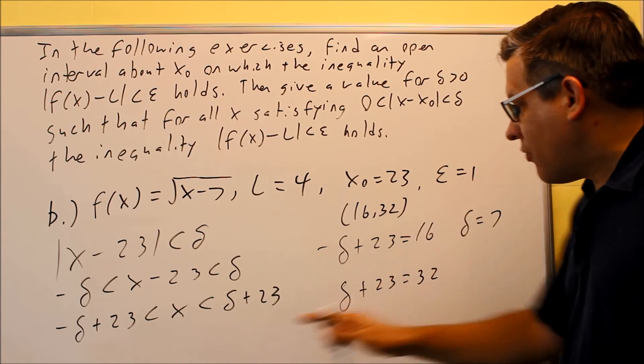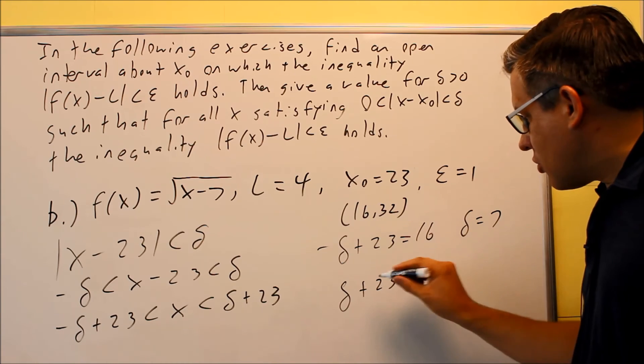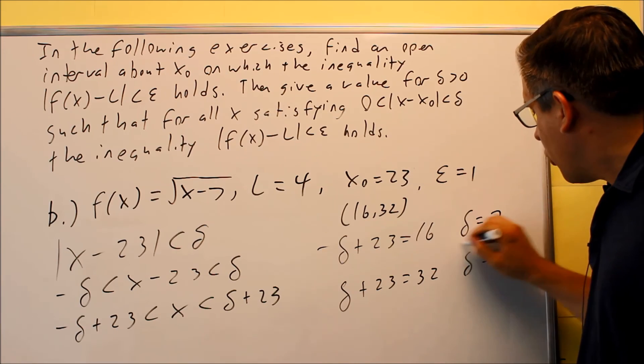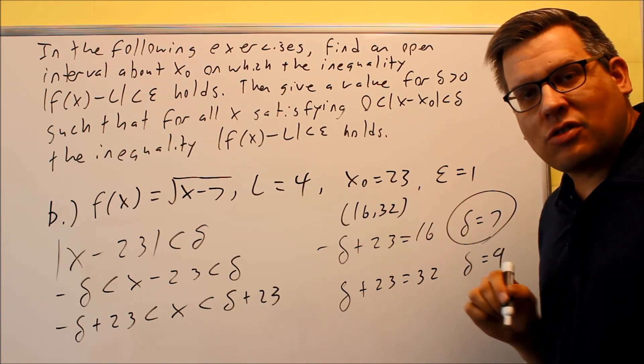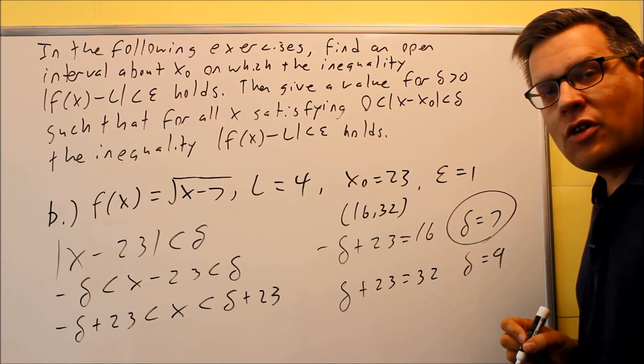So that was the first one we set equal to 16. Here's the second one set equal to 32. So subtract 23 from both sides, we get delta is equal to 9. We want to pick the smaller one again. We're minimizing the error in that direction, the x direction. So 7 is going to be your answer.